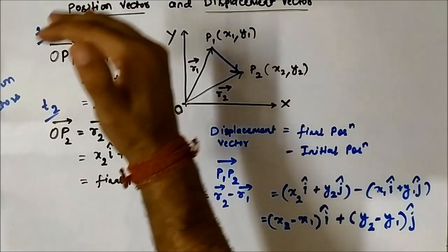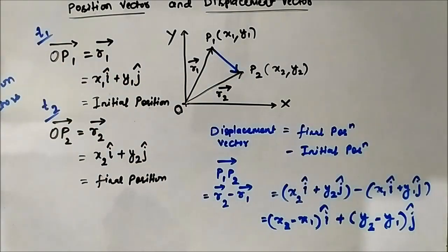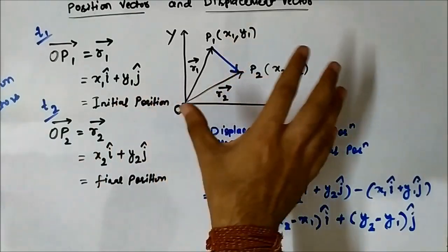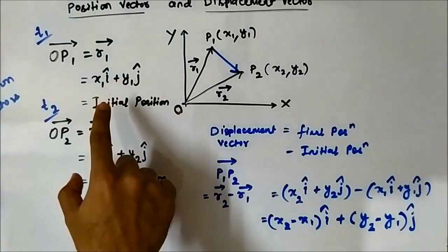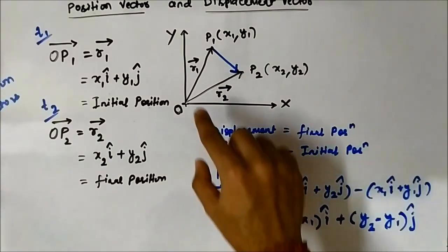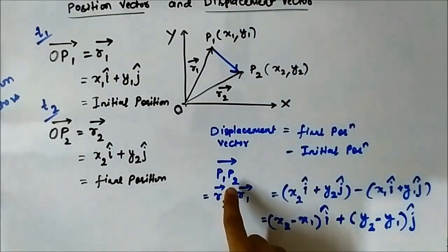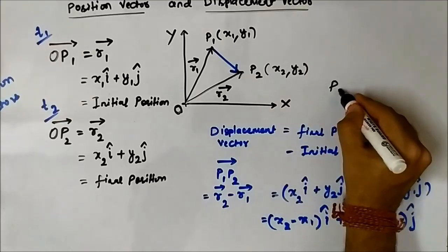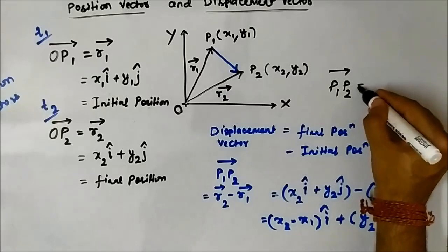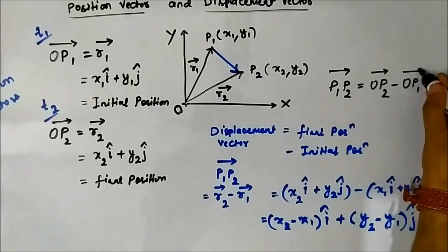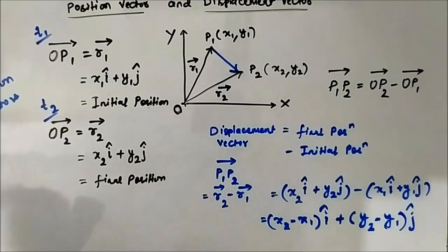So the basic things involved: first, denote the initial and final positions using the two-coordinate system x and y axis. For determining the displacement, use final position minus initial position — that is the displacement vector. The vector P1P2 equals r2 minus r1, which is OP2 minus OP1, the final position minus the initial position. This is the whole concept of position vector and displacement vector.